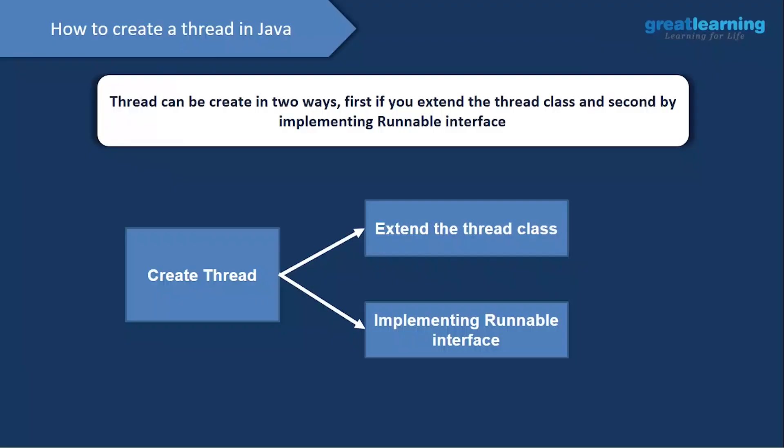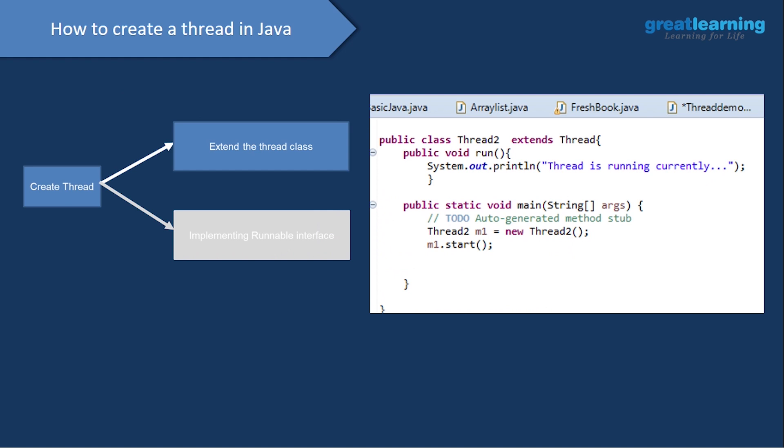There are two ways to create a thread in Java: first, by extending the Thread class; second, by implementing the Runnable interface. Here, my class name is Thread2. Always remember the convention — class names start with a capital letter. Now I'm going to extend the Thread class. When extending Thread, you always need to override the run method.